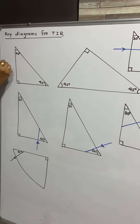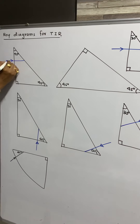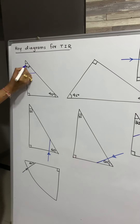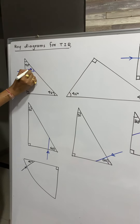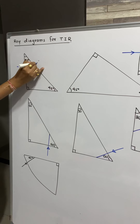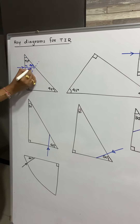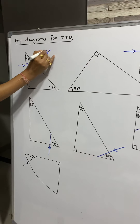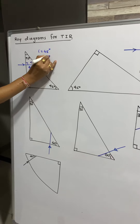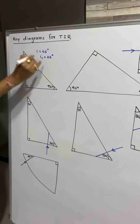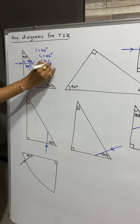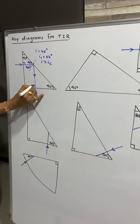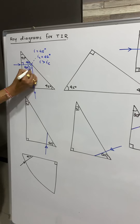This is to turn light by 90 degrees. The ray is incident normally. This angle is 90 degrees. Since this face is 45 degrees, this is also 45 degrees. I will draw the normal here. My angle of incidence is 45 degrees, which is greater than the critical angle of 42 degrees. Since the angle of incidence is greater than IC, there is TIR. The light turns by 90 degrees — this is 90, this is 45 degrees.